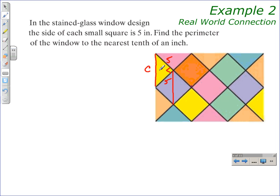We multiply by 10 because there are ten lengths of c that make up the perimeter of the stained glass window. Writing down the Pythagorean theorem, we have c² = a² + b².